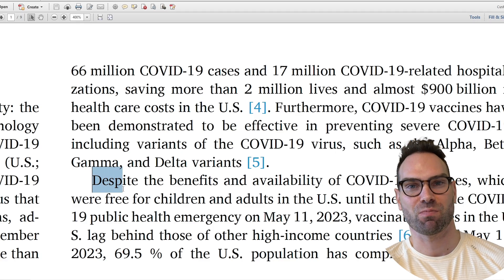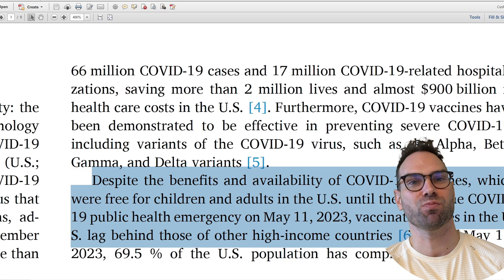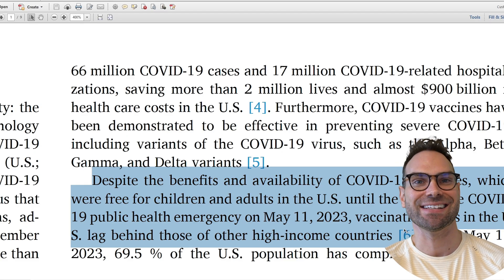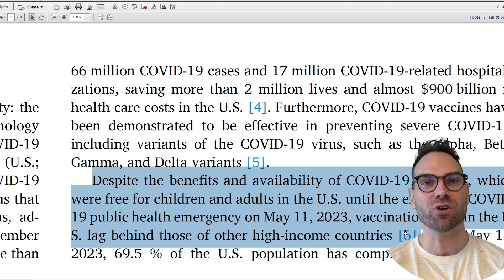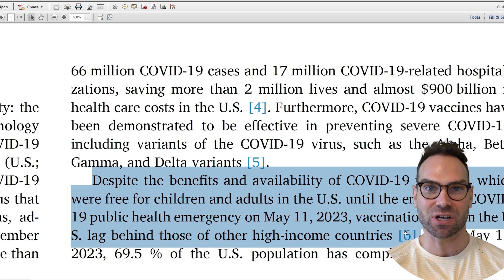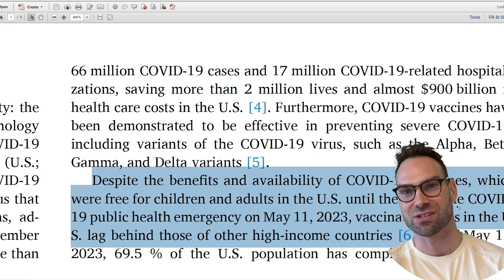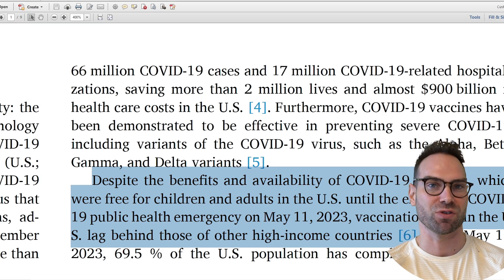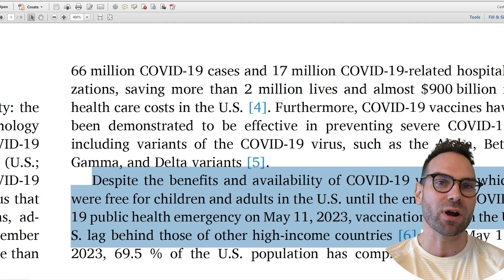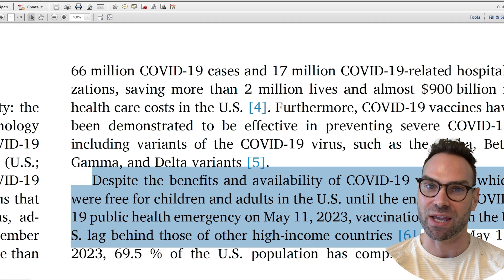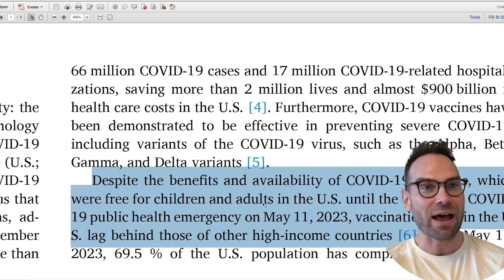Your topic sentence — the point of the paragraph — is right here. It's basically saying: despite widespread and free availability of vaccines, the U.S. is lagging behind. If you're a reader going through this quickly, you've made it easy because you've laid this out very clearly for them. There are some extra commas and clauses which break up the reading a little bit, but the point of this paragraph is clear. You already know what that paragraph is going to deliver — it's going to tell you how the U.S. is lagging behind. That was the P.